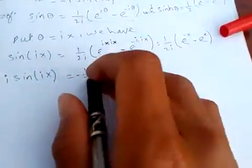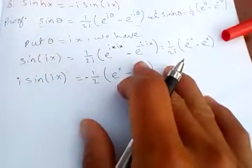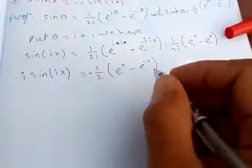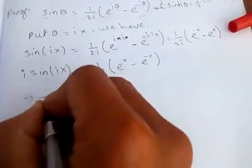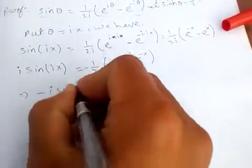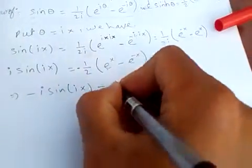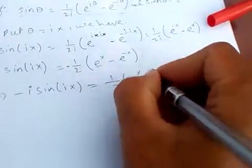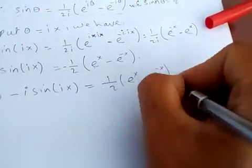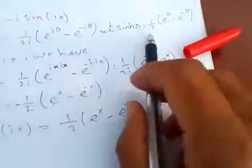Multiplying both sides by -1, we get -i·sin(ix) = (1/2)(e^x - e^(-x)), and this is the same as sinh(x).